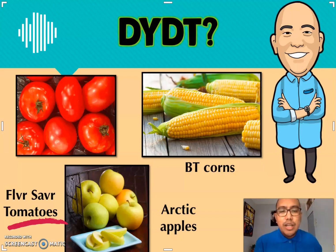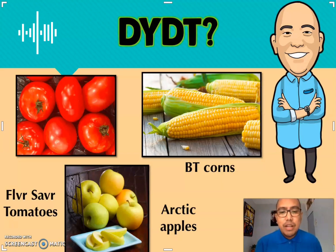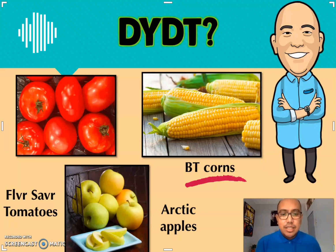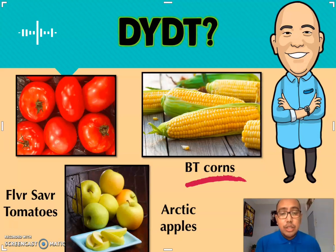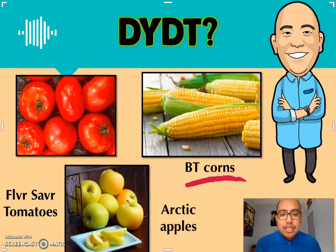The second one is the BT corns. BT stands for Bacillus thuringiensis, which is a soil bacterium that produces insecticidal toxins. Genes from the BT can be inserted into crop plants such as corn to make them capable of producing insecticidal toxins and therefore resistant to certain pests.